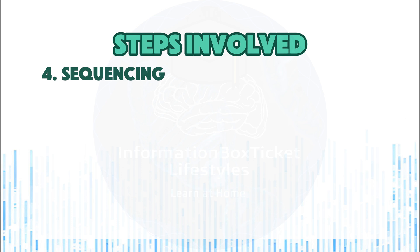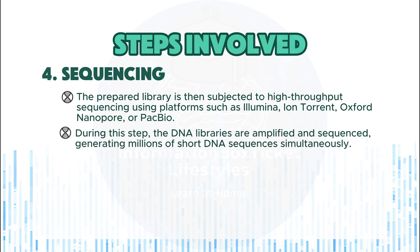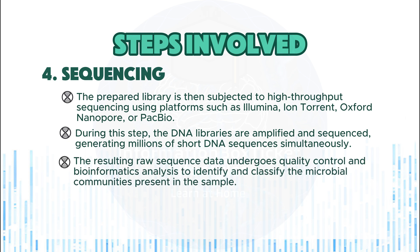Step 4: Sequencing. The prepared library is then subjected to high-throughput sequencing using platforms such as Illumina, Ion Torrent, Oxford Nanopore, or PacBio. During this step, the DNA libraries are amplified and sequenced, generating millions of short DNA sequences simultaneously. The resulting raw sequence data undergoes quality control and bioinformatics analysis to identify and classify the microbial communities present in the sample.